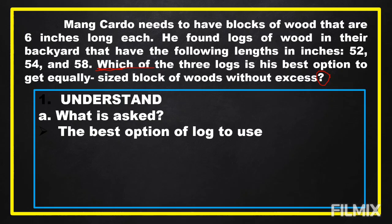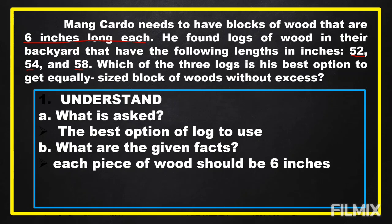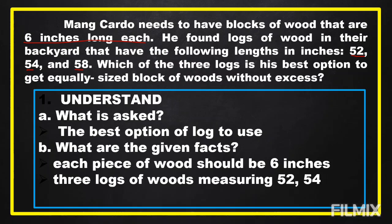After we know what is asked in the problem, the next step is to identify the given facts. We have 6 inches long, and we also have 52, 54, and 58. So the given facts in the problem are: one, each piece of wood should be 6 inches long; and two, three lengths of wood measuring 52, 54, and 58 inches.